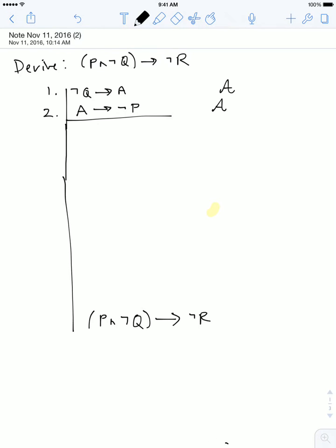And the justification for this last line is going to be that I have introduced a conditional. And the reason, again, for thinking that that's going to be my last step is that this target sentence does not appear anywhere in my primary assumptions.